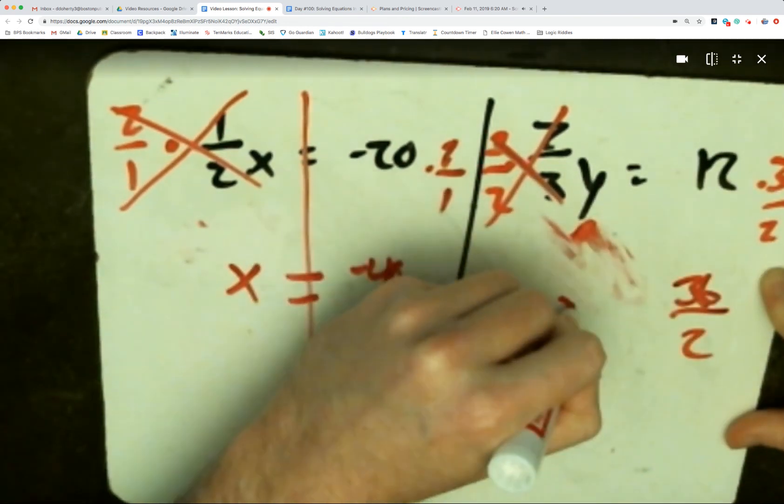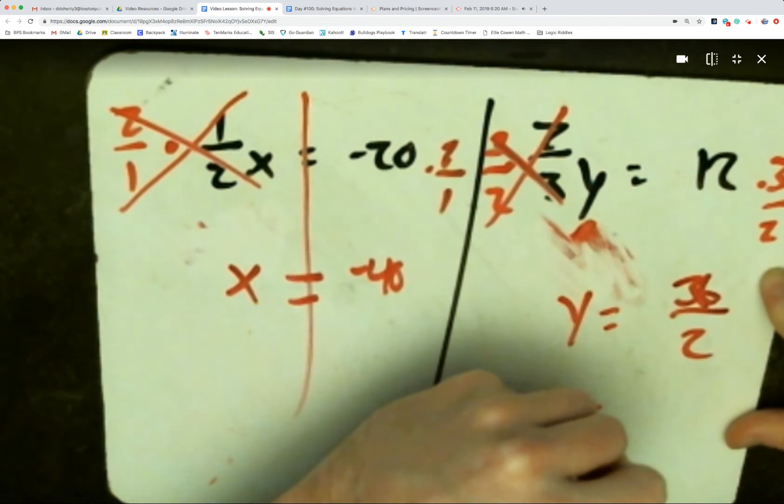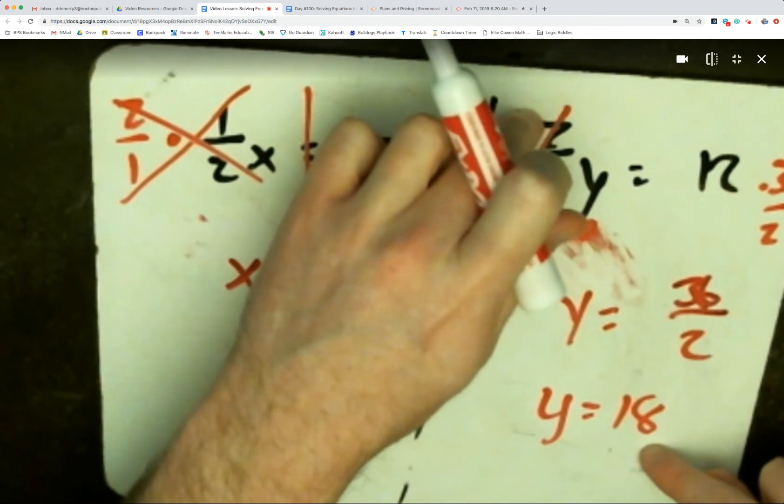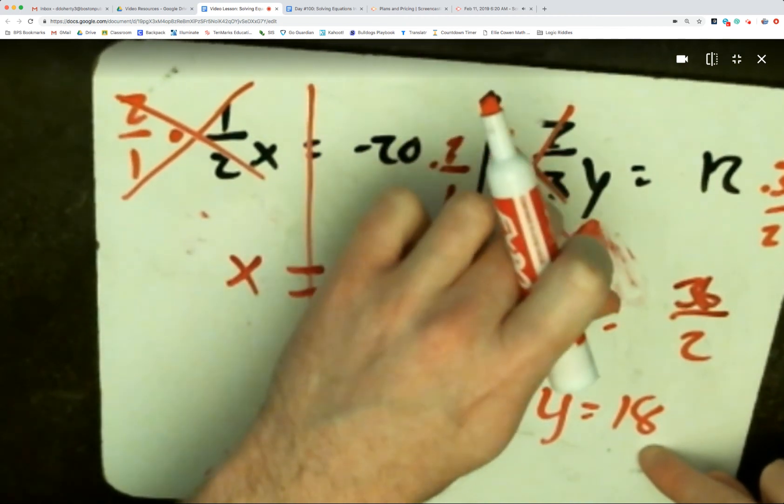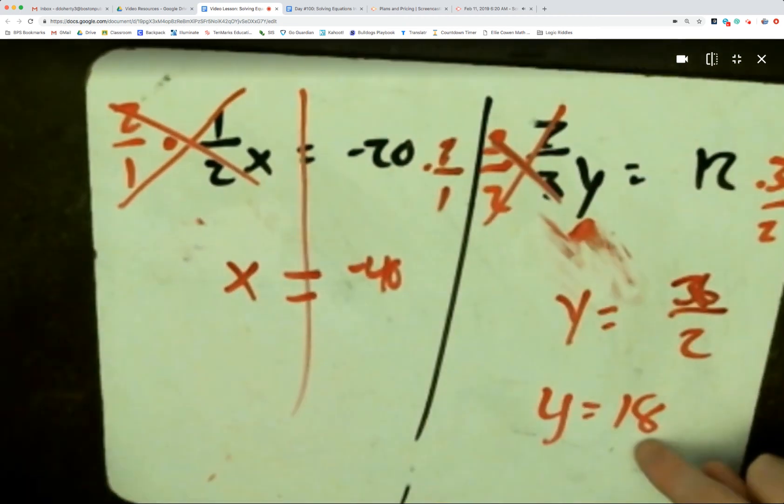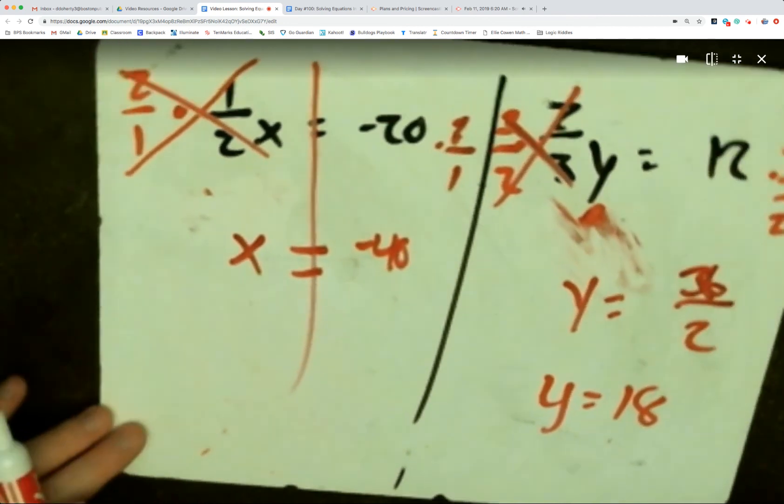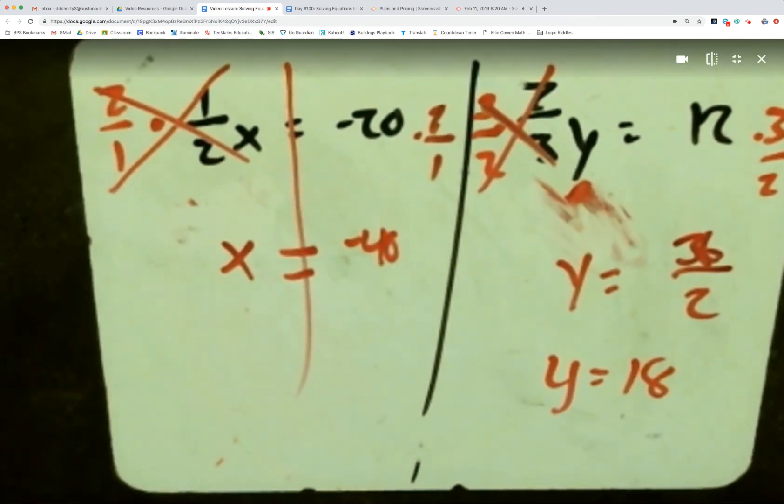So I get 36 over 2 for y, and y is equal to 18. I can plug that back in: 18 times 2 is 36, 36 divided by 3 gives me 12. So if I put 18 in for y, 18 times two-thirds really does give us 12.